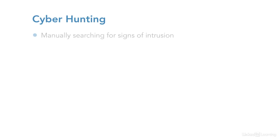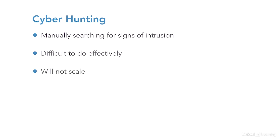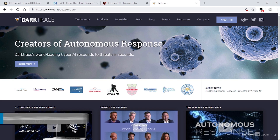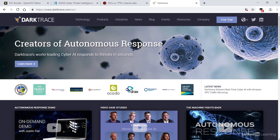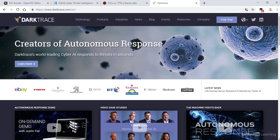Cyber hunting, to check for the presence currently or in the past of intrusions, is essentially a manual form of detecting indicators of attack. While there has been a lot of attention placed on cyber hunting, the reality is that cyber hunting manually can be very difficult to do effectively and it won't scale. However, by combining cyber hunting methodologies with automation, analytics and artificial intelligence, intrusions can be detected at speed and at scale. These kinds of products are starting to emerge, with Darktrace being an early example.